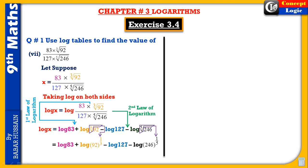The exponent (1/3) becomes the coefficient in front of log, giving: log 83 plus (1/3) log 92 minus log 127 minus (1/5) log 246. The index becomes the coefficient placed before the log term using the third law of logarithms.